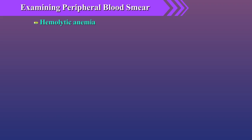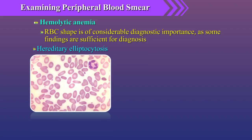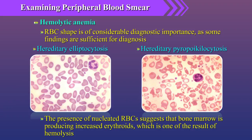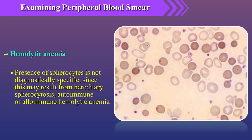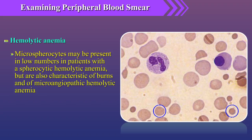In hemolytic anemia, RBC shape is of considerable diagnostic importance, as some findings are sufficient for diagnosis, like in hereditary elliptocytosis and hereditary pyropoikilocytosis. The presence of nucleated red blood cells suggests that the bone marrow is producing increased erythroids, which is one result of hemolysis. Presence of spherocytes is not diagnostically specific, since it may result from hereditary spherocytosis or autoimmune or alloimmune hemolytic anemia. Microspherocytes may be present in low numbers in spherocytic hemolytic anemia but are also characteristic of burns and of microangiopathic hemolytic anemia.